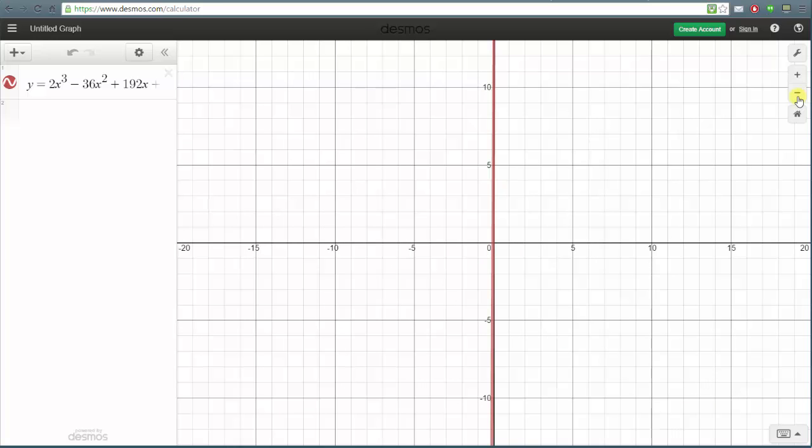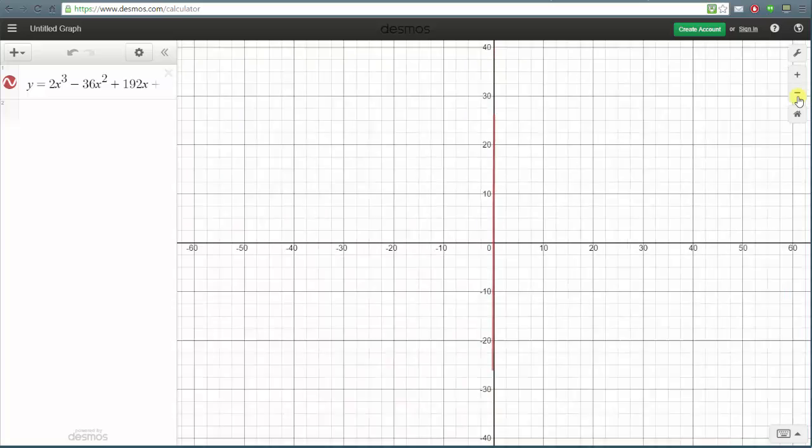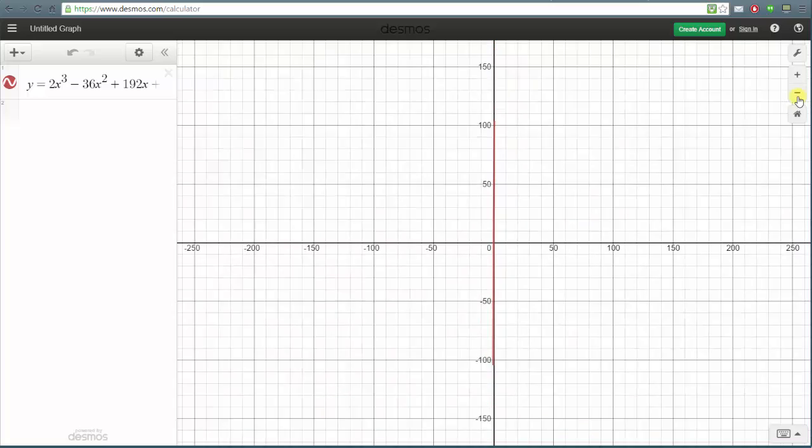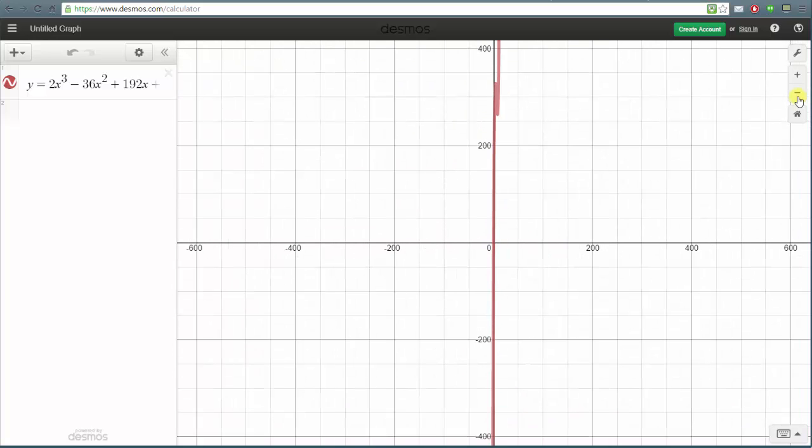So zoom out, zoom out, zoom out and we'll continue zooming out. And notice now we can see it looks like right in this region here the graph is turning and therefore we should be able to determine the local maximum and local minimum if we zoom in on this region.